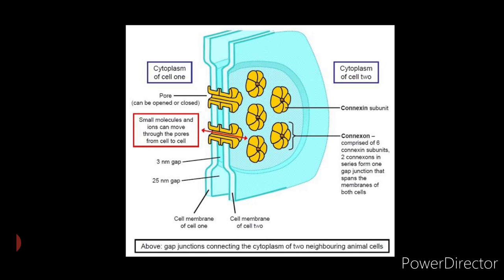As a result, gap junctions have the potential to integrate the activities of the individual cells of a tissue into a functional unit. Now let us understand the regulation of gap junctions.